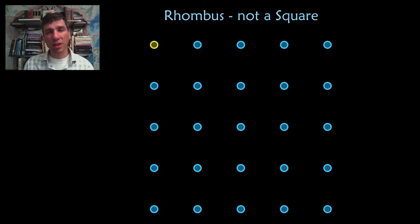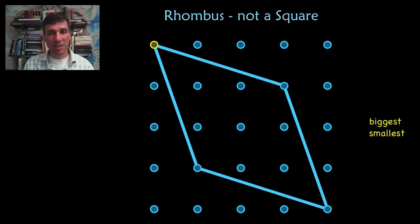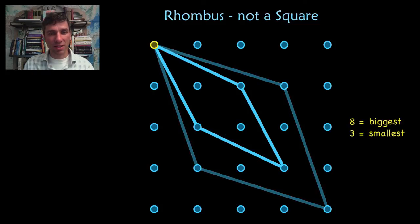What about a rhombus? What is the largest rhombus and the smallest rhombus that has that yellow vertex and the other vertices chosen from all of those other points? Turn off the video and try to figure that out. Here's the biggest one and here's the smallest one.